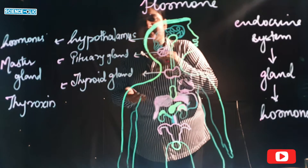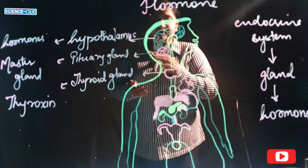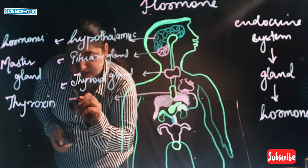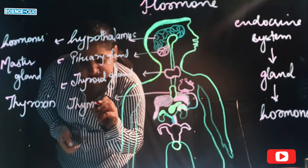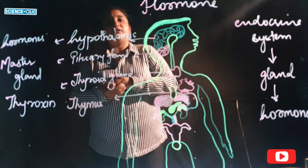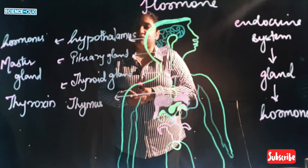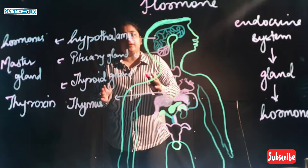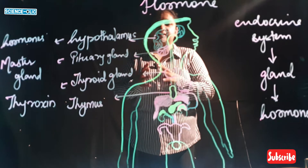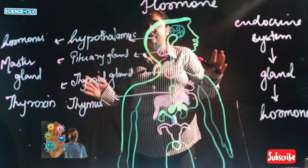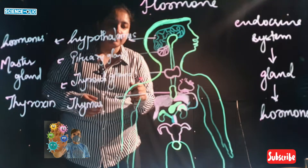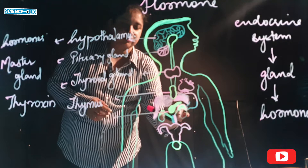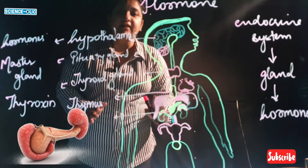Next is the thymus, shown in green. This helps to produce T cells in a maturing person. It helps to strengthen immunity and fight severe diseases. It is a leaf-like structure.